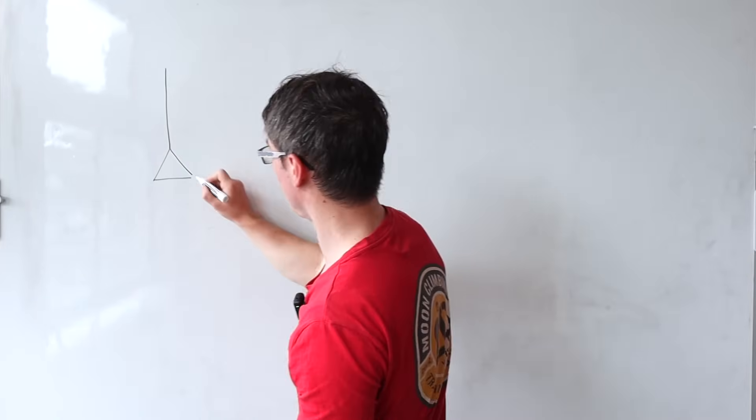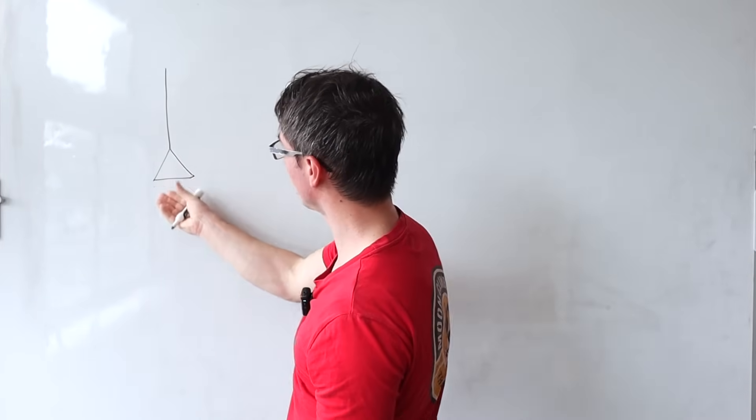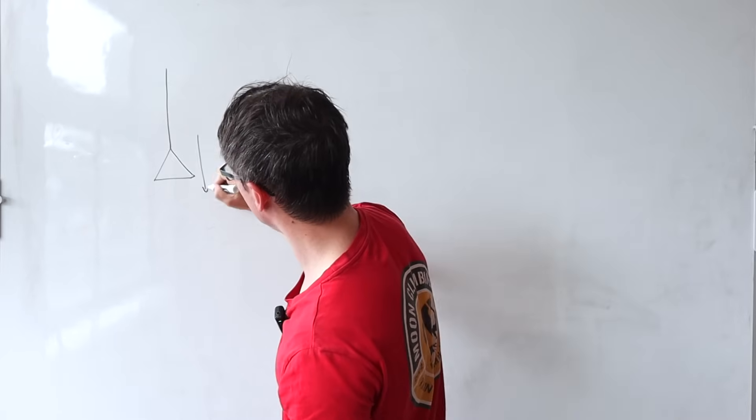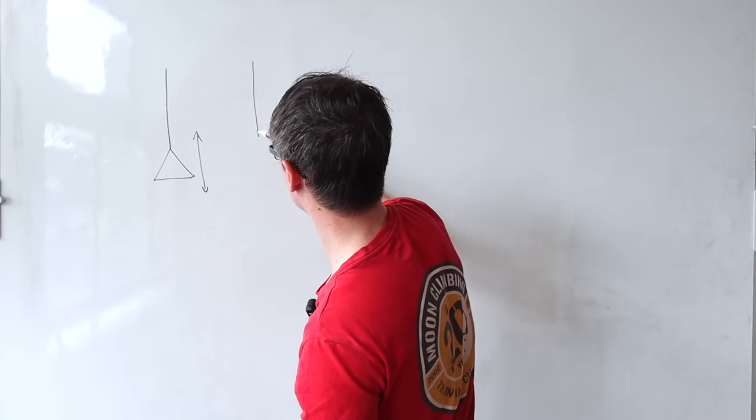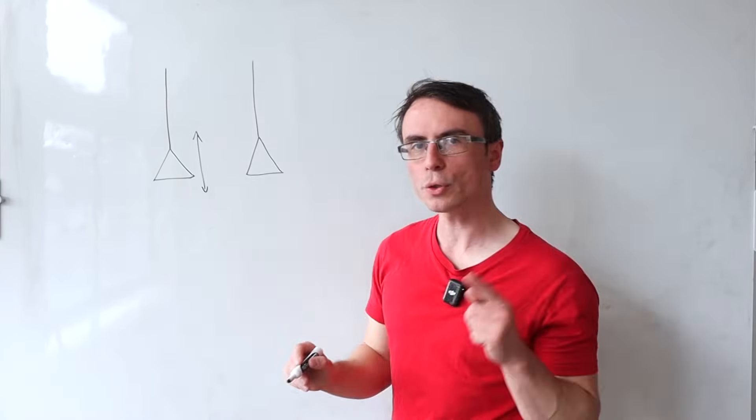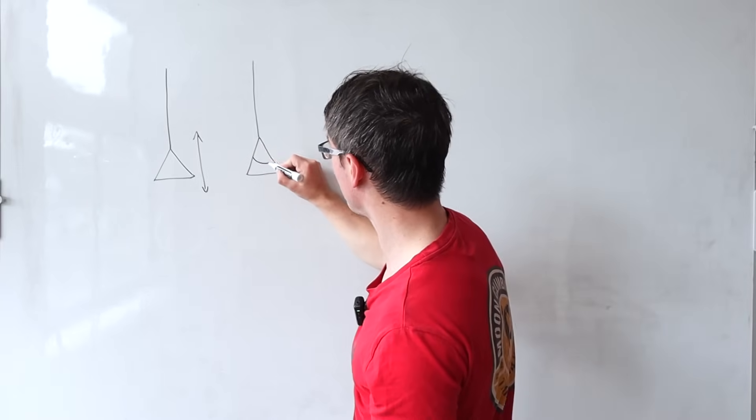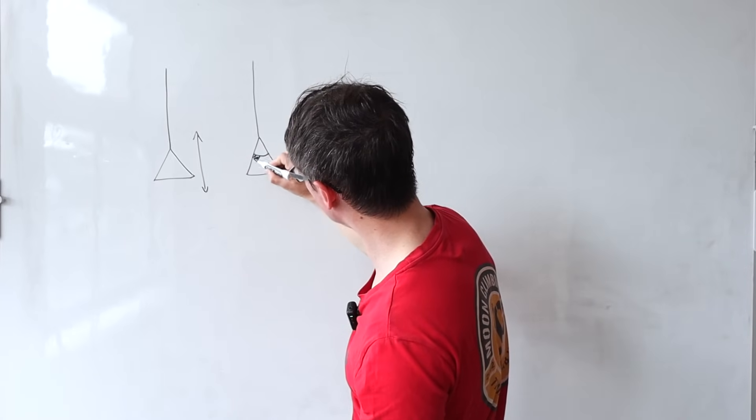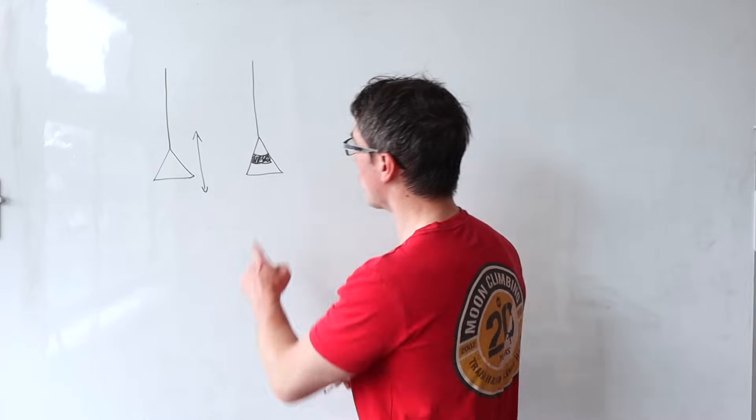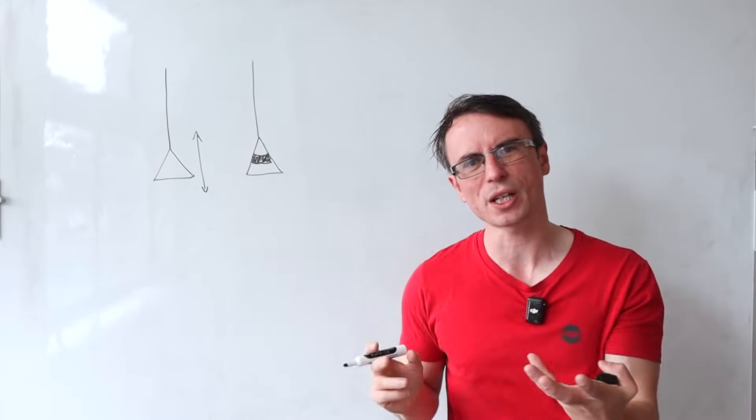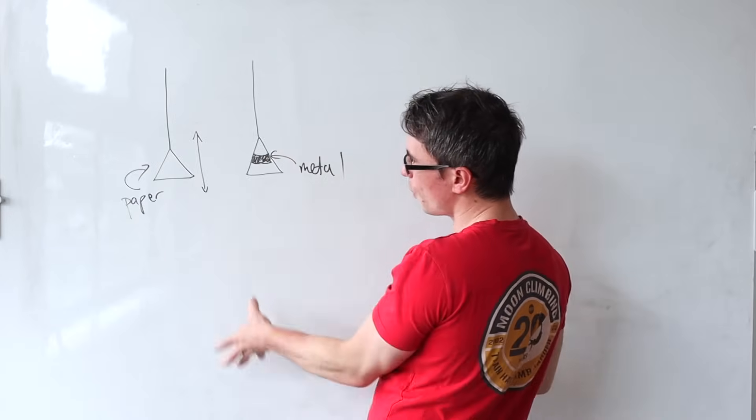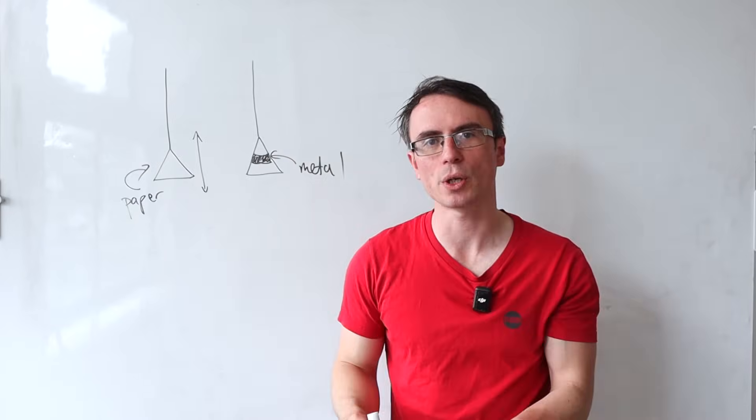Now, imagine that we have a paper cone, and we set it to oscillate up and down in the vertical plane. And let's have another one, like so, but we're going to add a metal ring onto it, and that metal ring will just increase its mass, but will not affect its cross-sectional area very much.